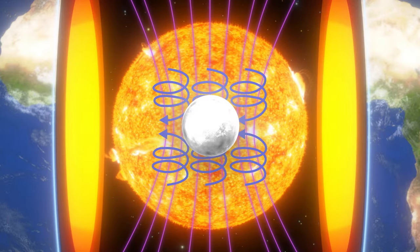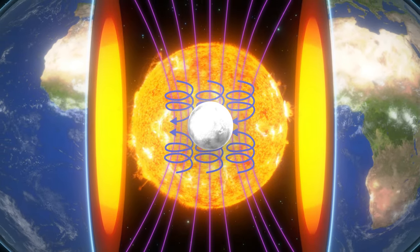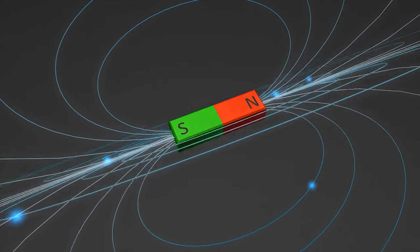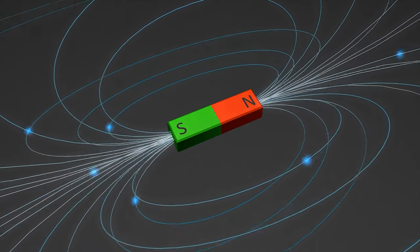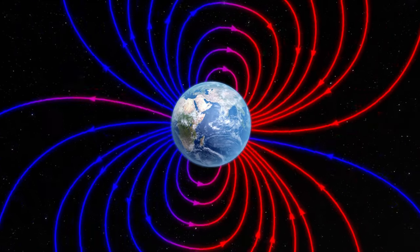The Coriolis effect causes convection currents in the outer core to spiral, creating swirling vortices. These vortices are thought to organize magnetic field lines, keeping the magnetic poles aligned. But what happens during a geomagnetic reversal?